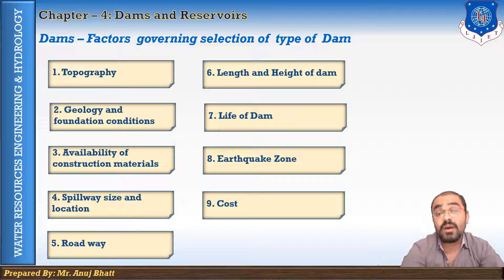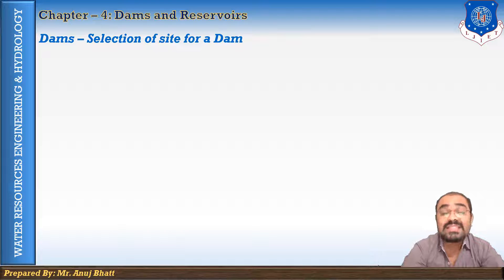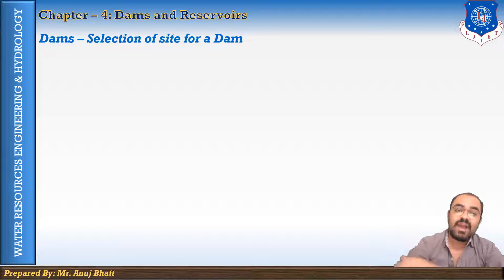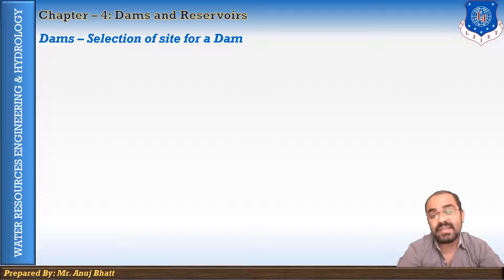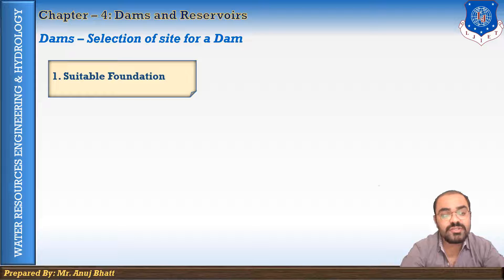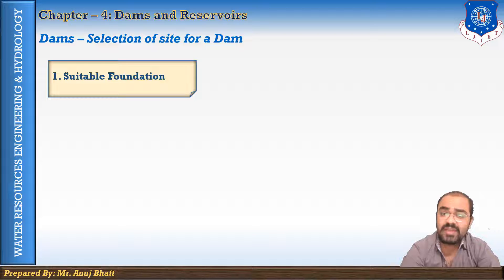The next topic is the factors affecting the selection of the site for a dam — at which particular place along a river we will fix the dam site. The first factor is suitable foundation. A suitable foundation should be available at the selected site. For a gravity dam, sound rock foundation is essential. For other dam types, any type of foundation can be used with proper treatment.